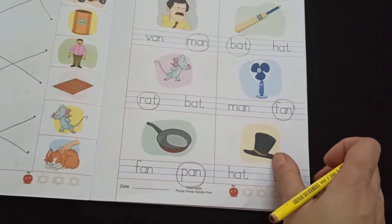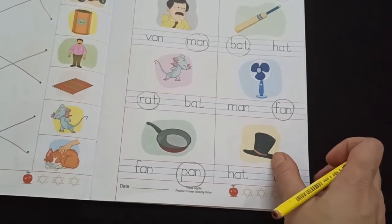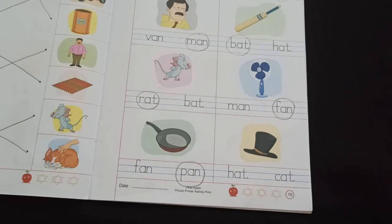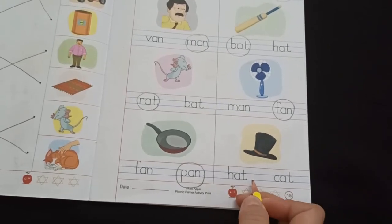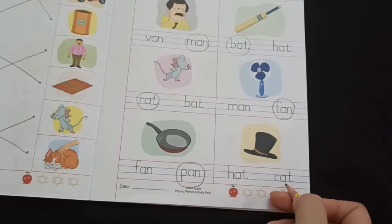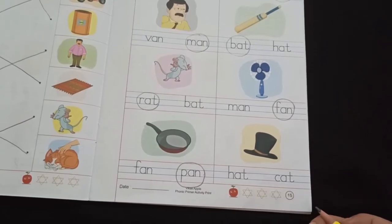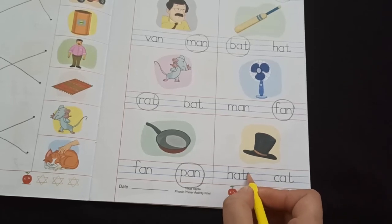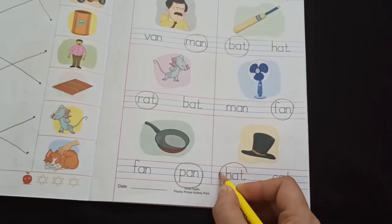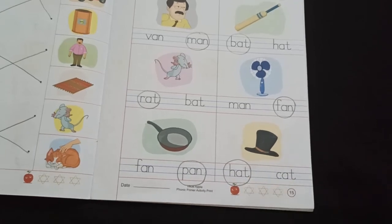Next word is, what is this? This is hat. Hat. We all know. Let's read the words. H-A-T, hat. C-A-T, cat. And which one is the correct word? This is it. Hat.